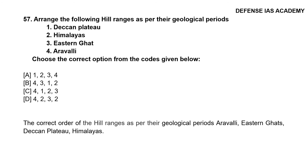Question 57: Arrange the following hills as per their geological periods. The correct option is option B, order 4, 3, 1, 2. The correct order of hill ranges as per their geological periods are Aravalli, Eastern Ghats, Deccan Plateau and then Himalayas.